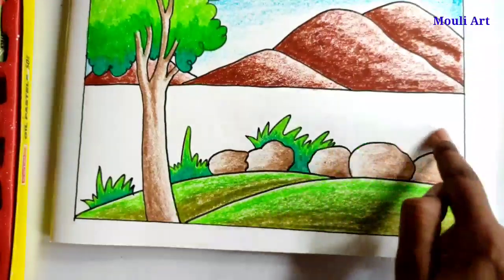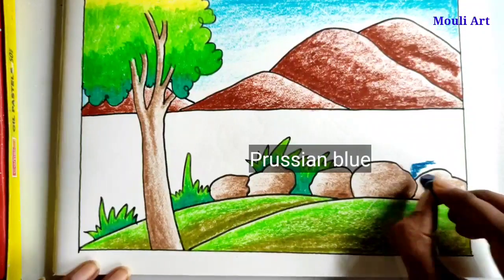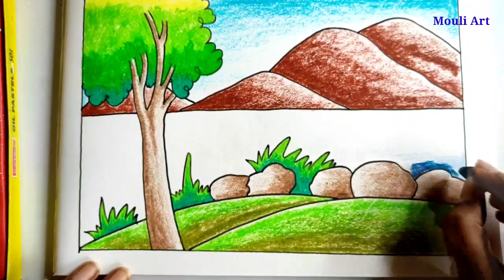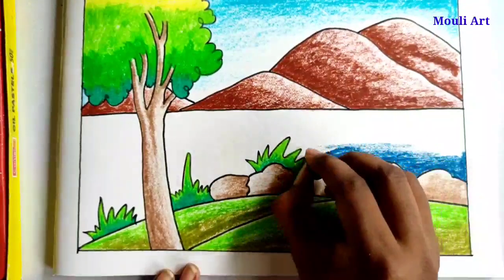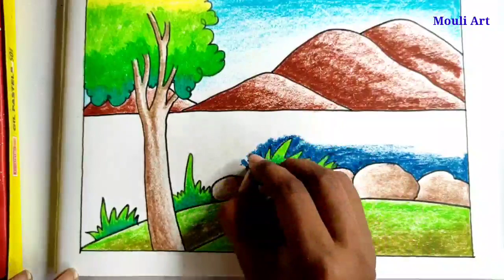Last one is the river. I will color it with Prussian blue. Same process will repeat every time, color it dark to light as you can see how I am doing it.